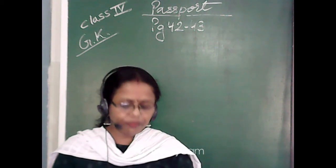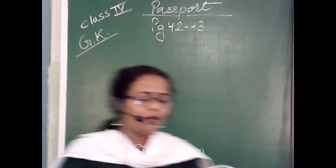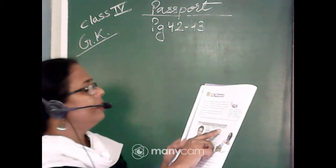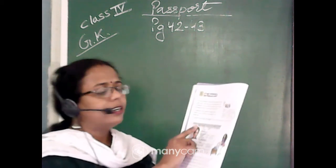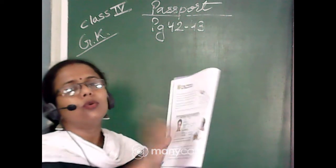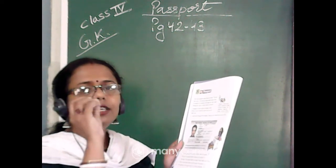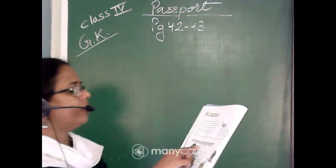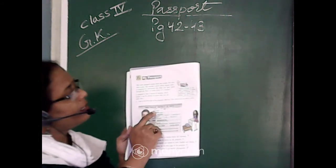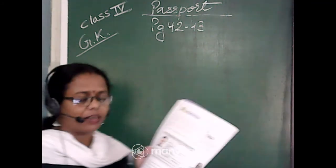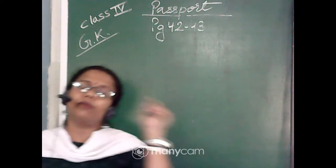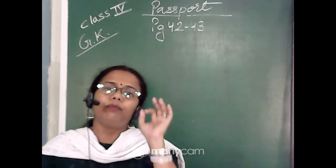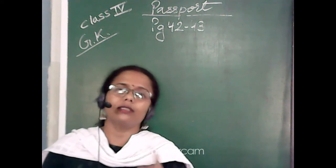In the passport picture we can see it is written 'Republic of India,' that is 'Bharat Ganarajya' — this is the logo and writing of the Indian government. It is a republic country. Now, the first field is 'type.' Here it is written 'P.' The type of passport depends on the purpose for which you are going to a different country. P-type passport is of blue color and it is known as a personal passport.